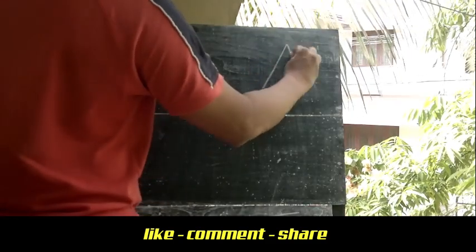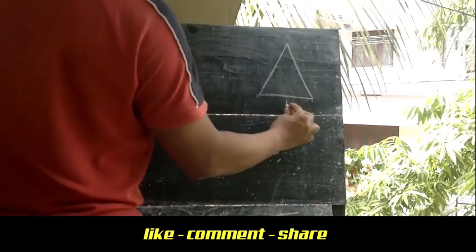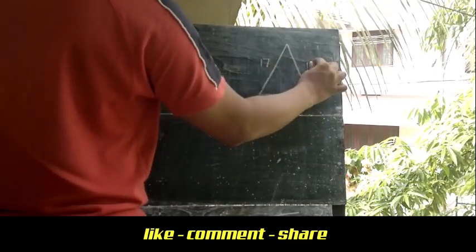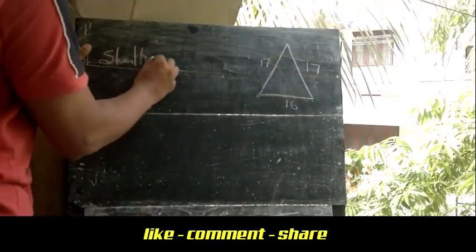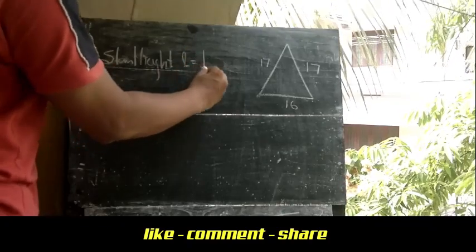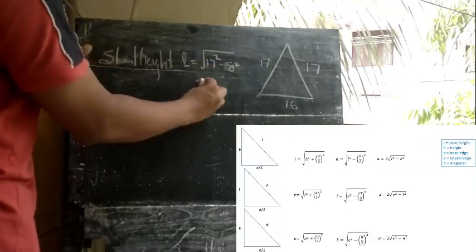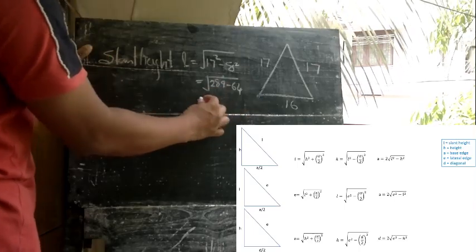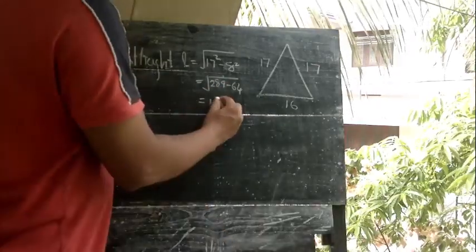The base is 16 and we are given the value 17. We are going to calculate the slant height using the formula: square root of (e squared minus (e/2) squared). The slant height comes out to 15 cm.